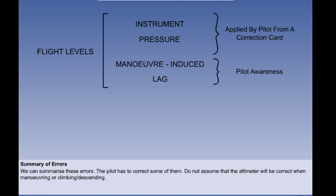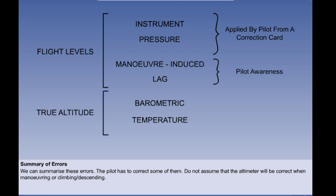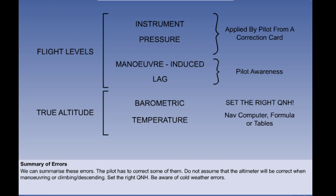If we correct or allow for just these four and set 1013 and don't apply temperature corrections, we would be flying correctly at flight levels or pressure altitude. The next two are barometric error and temperature error. These are applicable if we wish to obtain true altitude from our altimeter. To avoid barometric error, set the right QNH and keep it up to date. And if temperature errors are significant enough to correct, this can be done by using a navigation computer, the formula, or tables. This completes the summary of errors which are inherent and are part of the normal operation of the altimeter when it is serviceable.